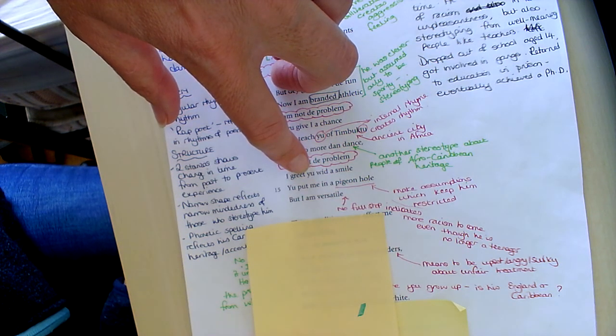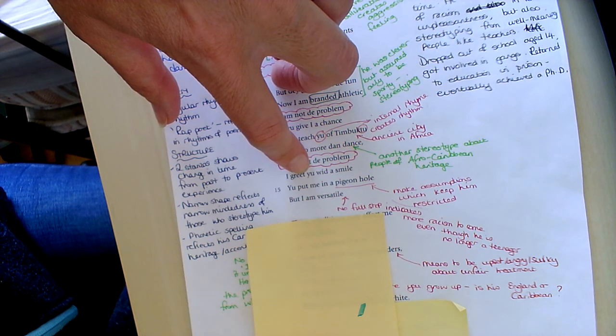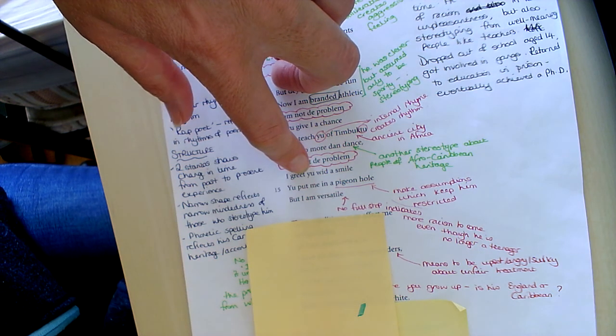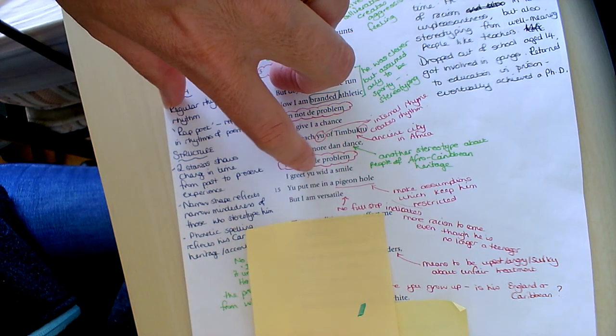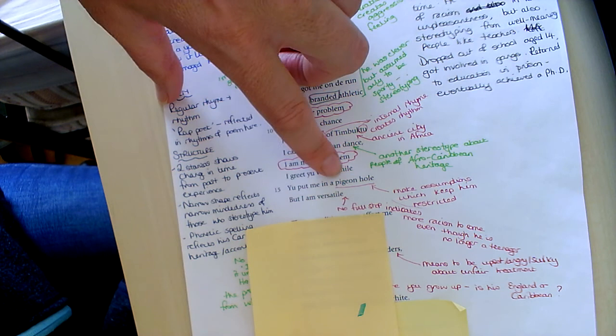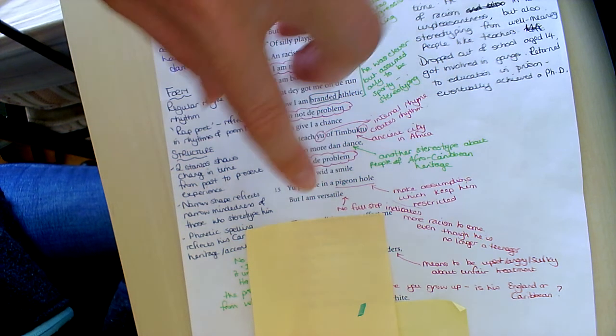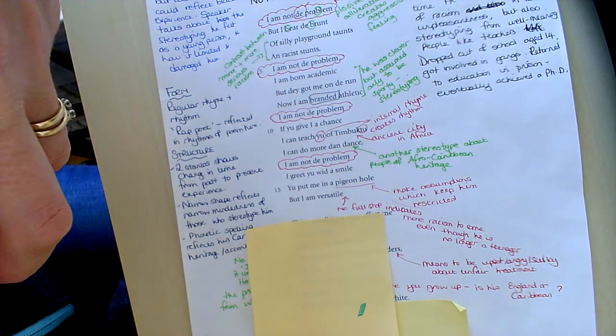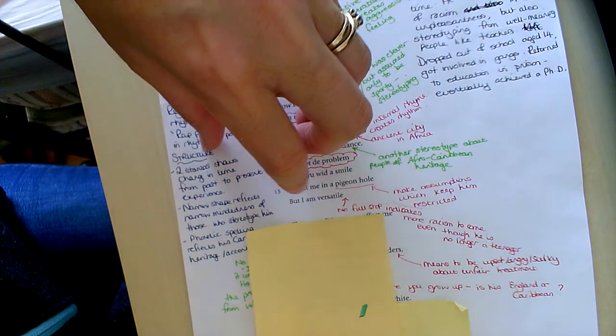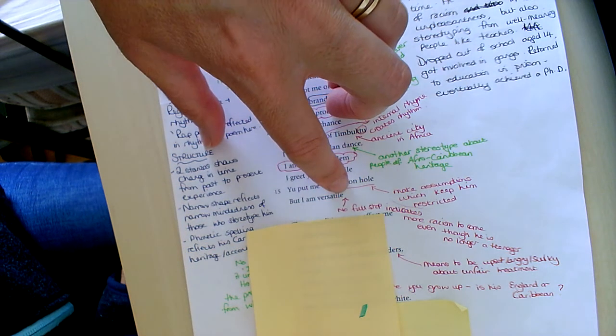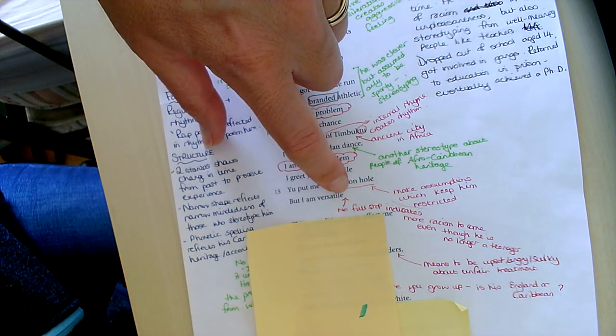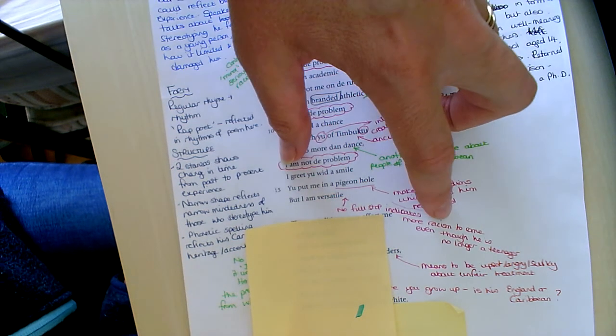So he says that's what you, it's got that second person address hasn't it, like Half-Caste and Class Game and some of the others, a first person speaker talking to someone, challenging their thinking about things. He says so I greet you with a smile but you put me in a pigeonhole. He says but don't, I'm so much better than that, I'm so much more than what you assume about me, I'm versatile, he says.